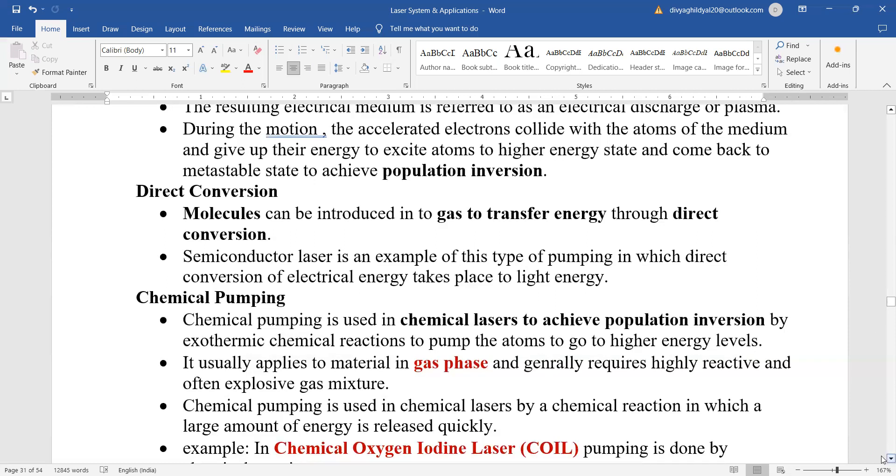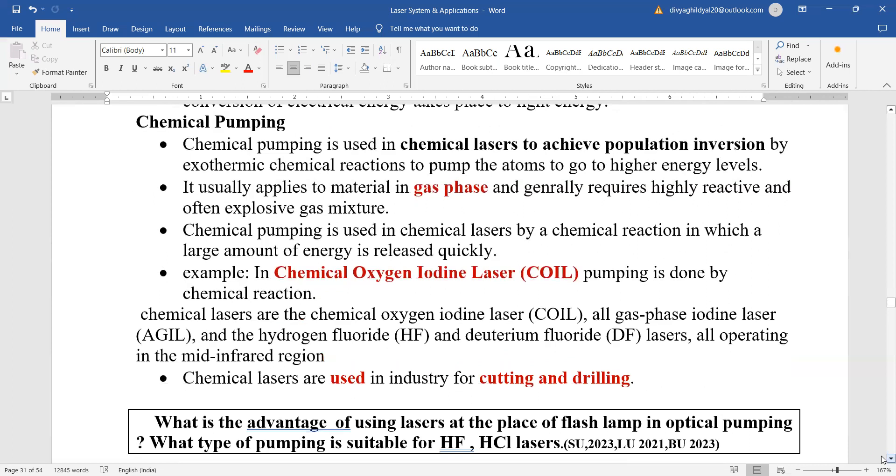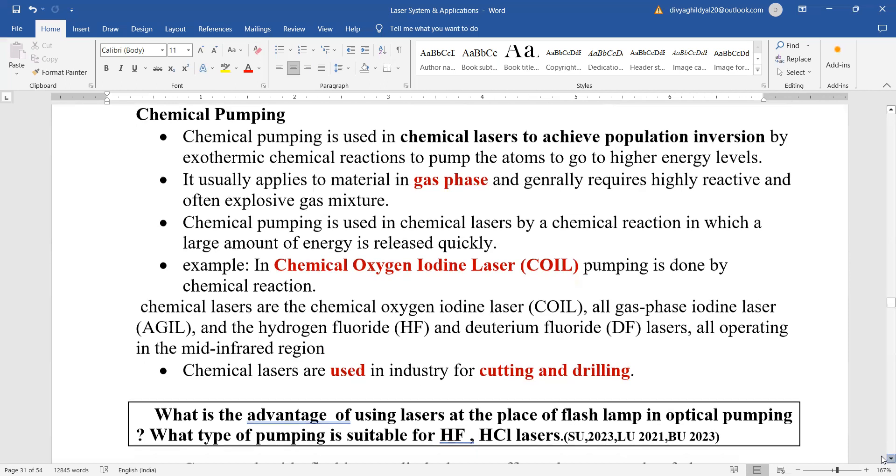Chemical pumping. The very word chemical means that you are using chemical lasers to achieve population inversion. Chemical pumping is used in chemical lasers by a chemical reaction in which a large amount of energy gets released very quickly. Most famous example of chemical lasers are the chemical oxygen iodine laser or you can remember the hydrogen fluoride and deuterium fluoride lasers which are operating in the mid-infrared region. Chemical lasers are used in the industry for cutting and drilling.